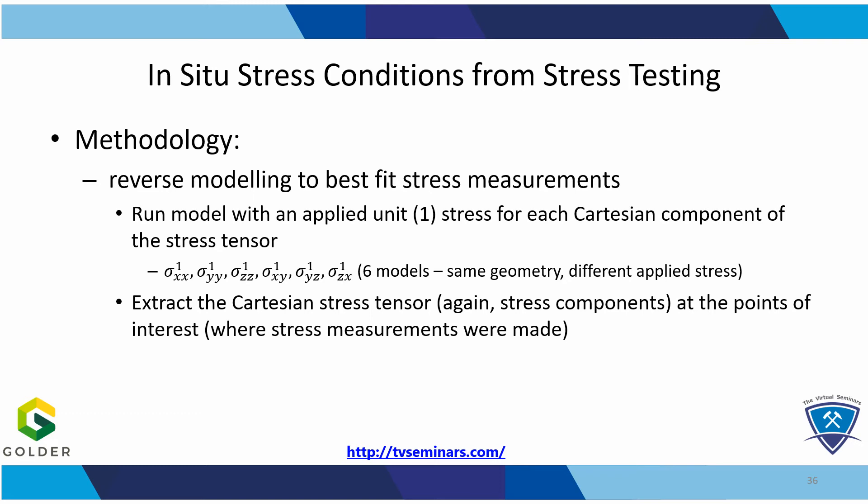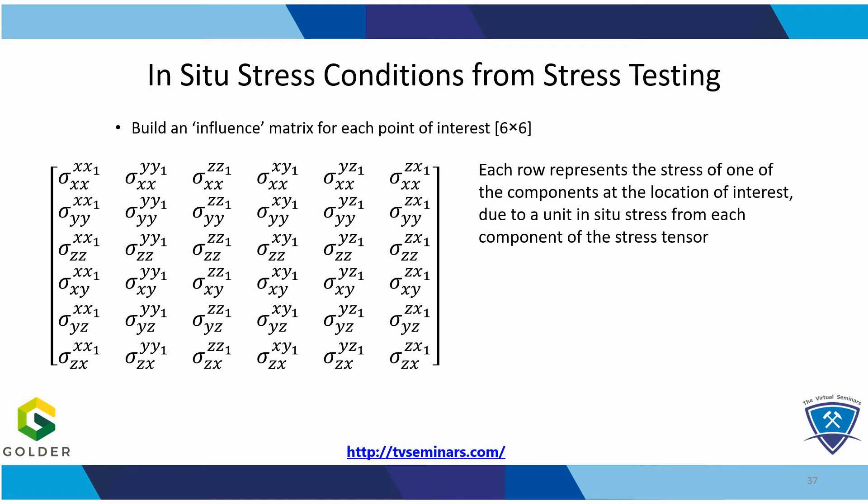To do this, we extract the stresses from the models for all the locations for which we have stress measurements. This matrix represents the results for each stress location. We have six models, each with one unit stress component loading the system, and then we extract all six stress result components due to that load at the point of interest. Each row represents one of the measured components at the point of interest — the lower index — due to all six components loading the system — the upper index.